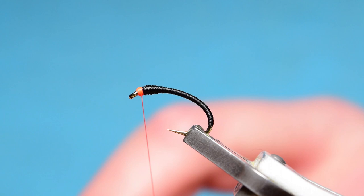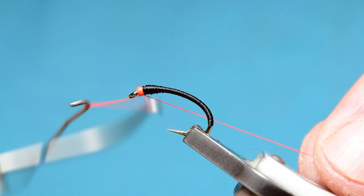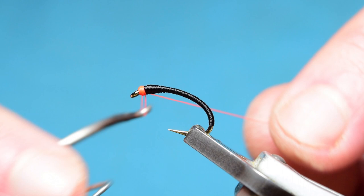Now, because you want that conical shape of the head, basically all you're doing is working your whip finish from forward to back, and you get to the back, just do two or three extra turns, and you get that kind of almost like that taper from back to front.